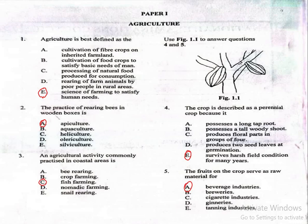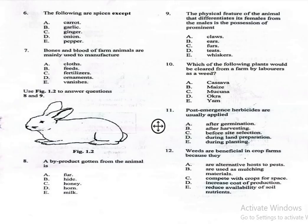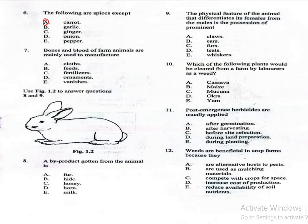Question number 6. The question says, the following are spices except one of them: A. Carrot, B. Garlic, C. Ginger, D. Onion, E. Pepper. Carrot is not a spice. Carrot is a vegetable. Garlic, ginger, onion, and pepper are common spices.